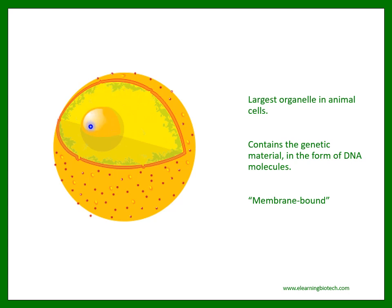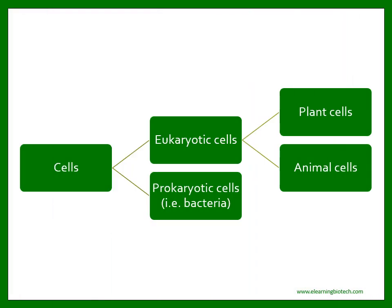The ball inside the nucleus is called the nucleolus. There are two main classes of cells: eukaryotic cells, or cells with a nucleus, which include plant cells and animal cells; and prokaryotic cells, without a nucleus, which include bacteria. The distinction between prokaryotes and eukaryotes is considered to be the most important distinction among groups of organisms. Eukaryotic cells contain membrane-bound organelles such as the nucleus, while prokaryotic cells do not.